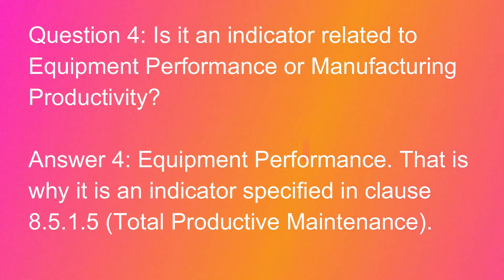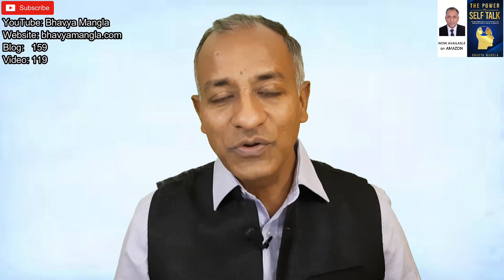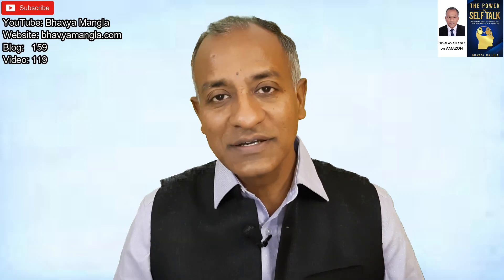The fourth question: is OEE an indicator of equipment performance or manufacturing productivity? While productivity comes to mind easily, it is important to understand that the word OEE comes from IATF 16949 clause 8.5.1.5, which is related to Total Productive Maintenance. In that context, we are talking primarily about effectiveness, so OEE is more related to equipment performance rather than manufacturing productivity, even though it can have an impact on that.